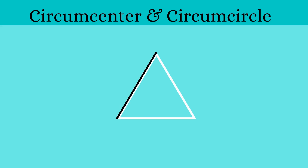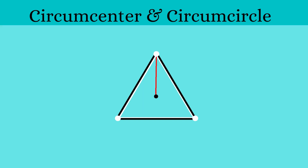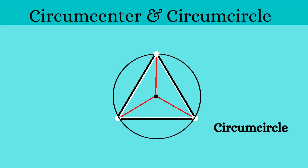Circumcenter and circumcircle of a triangle. We know that a triangle has three sides and three vertices. If we find a point which is equally distant from all the vertices of the triangle, we can say that it is the circumcenter of the triangle. Using this, we can construct the circumcircle, which is a circle that touches all three vertices of the triangle.